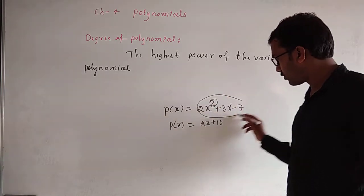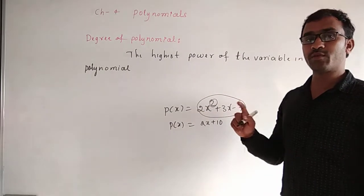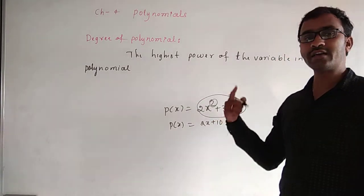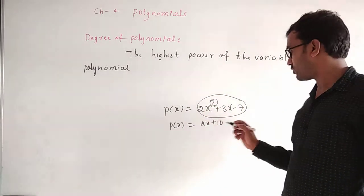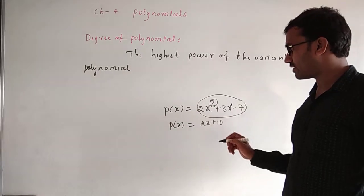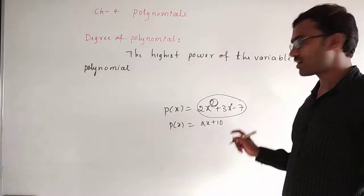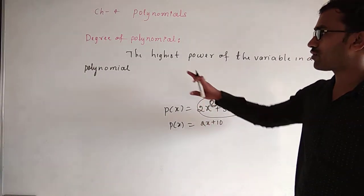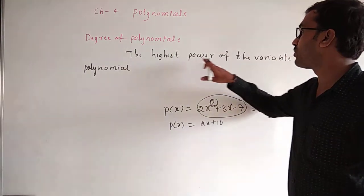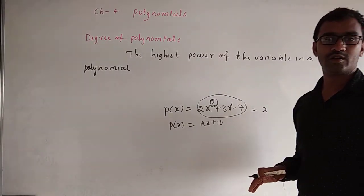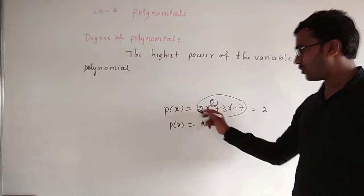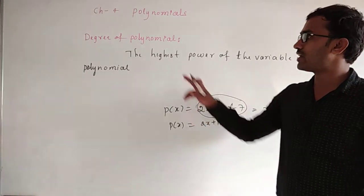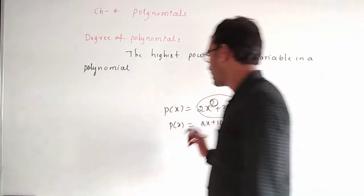The variable in the polynomial is X. The exponents are identified, and the highest power of the variable gives us the degree of the polynomial.